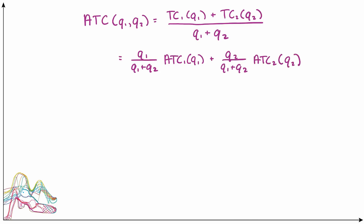If you instead had two separate total cost functions — one for making output 1 (TC1) and one for making output 2 (TC2) — you could calculate average total cost by taking TC1(Q1) plus TC2(Q2) and dividing by Q1 plus Q2. You could also see this as a weighted average: Q1/(Q1+Q2) times the average cost of output 1, plus Q2/(Q1+Q2) times the average cost of output 2.